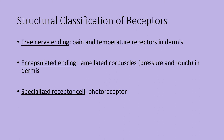If we classify receptors according to structure, there are three main types. There are free nerve endings — examples would be receptors that detect pain and temperature, found in the dermal layer of the skin. There are encapsulated endings — an example would be laminated corpuscles, also found in the dermal layer of the skin, that detect pressure and touch. And then there are specialized receptor cells, such as photoreceptors found in the eye.